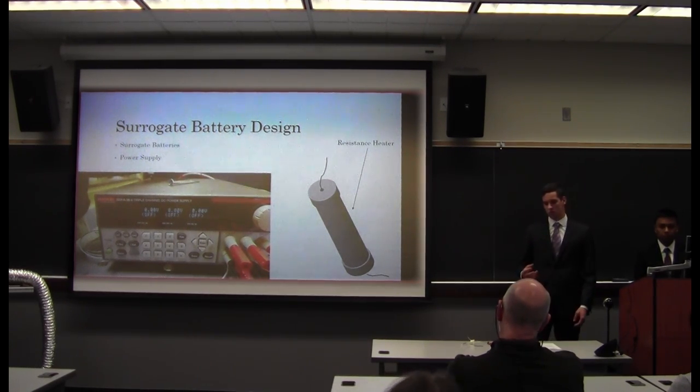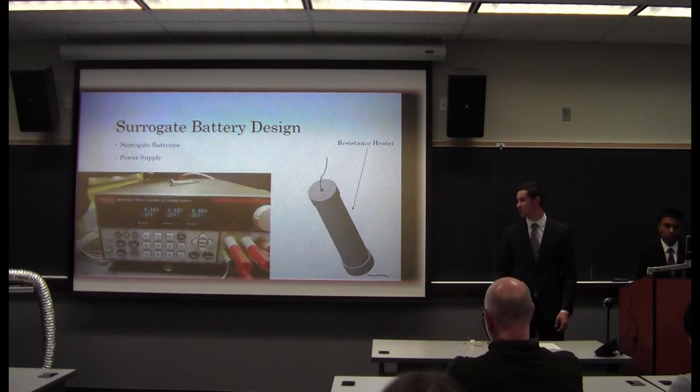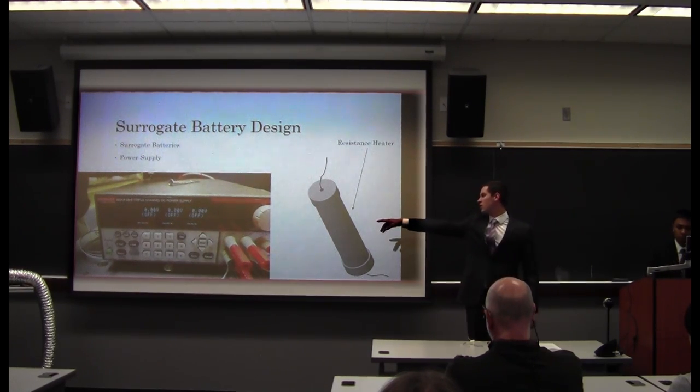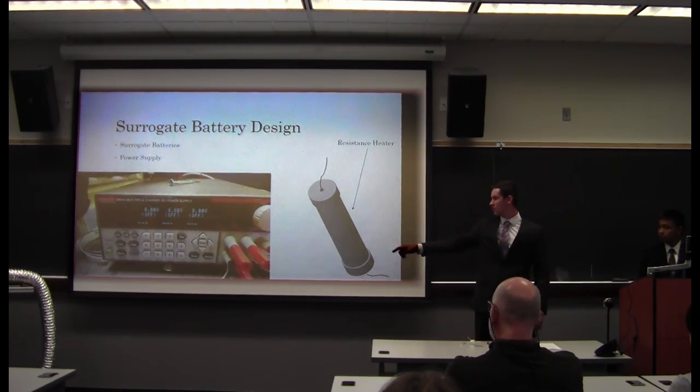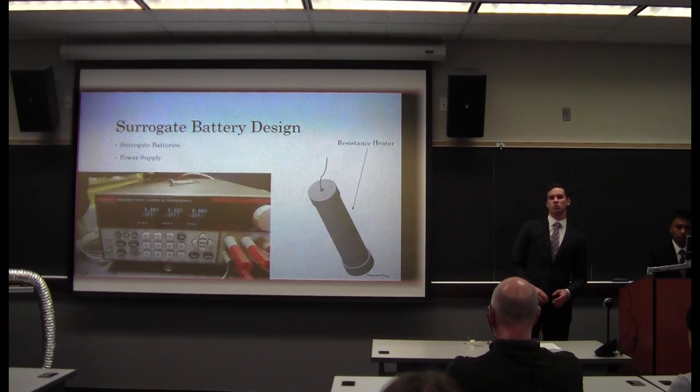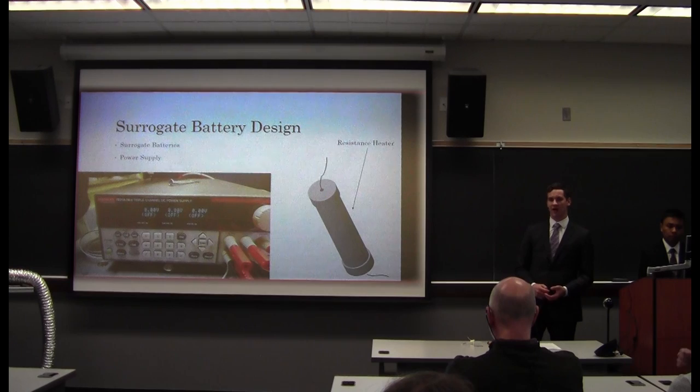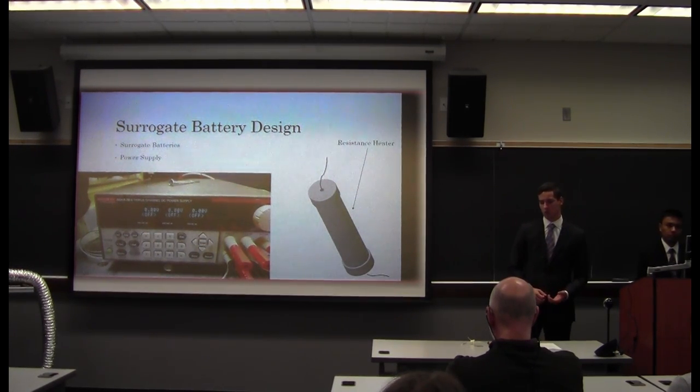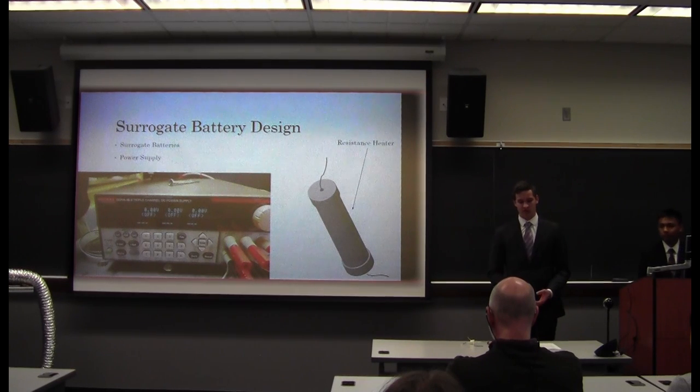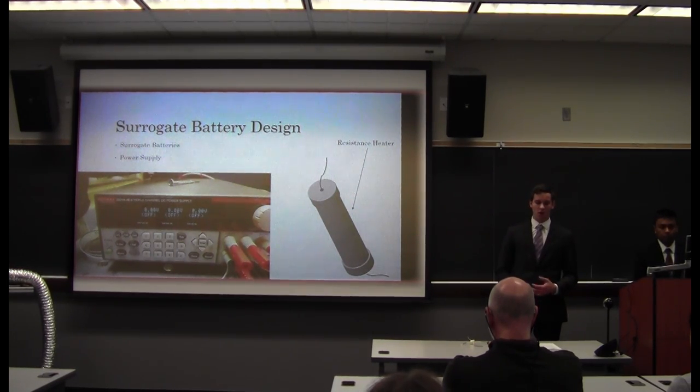In order to generate heat, the wire leads were connected to the power supply, which is this over on the far side there. And a constant voltage was run through them. In order to simulate a charge-discharge cycle of an actual battery, the power supply was cycled on and off manually. So we would spend a period of time putting voltage through it where it would heat up, and we would record that temperature data. And then we'd shut it off and let it cool back down as we continued to record the temperature data.